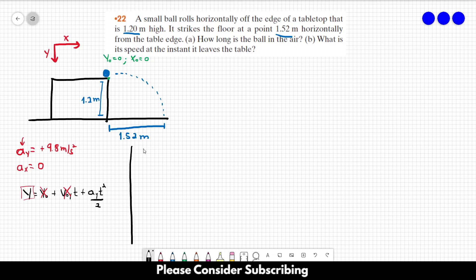So let's do it in small steps. So 2y is equal to ayt squared. 2y over ay equals to t squared. So t is equal to the square root of 2y over ay.